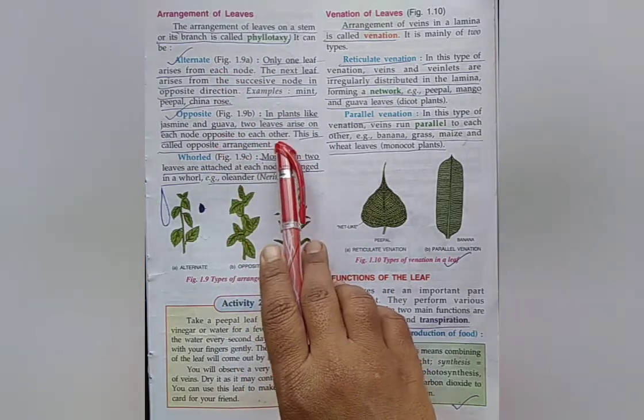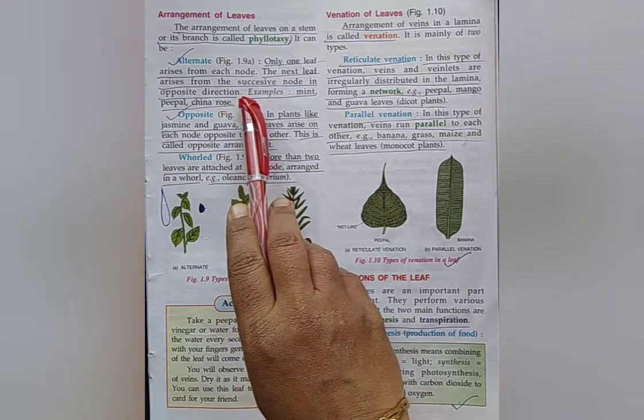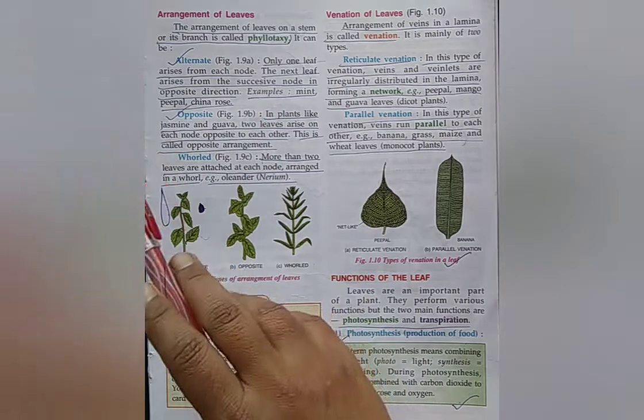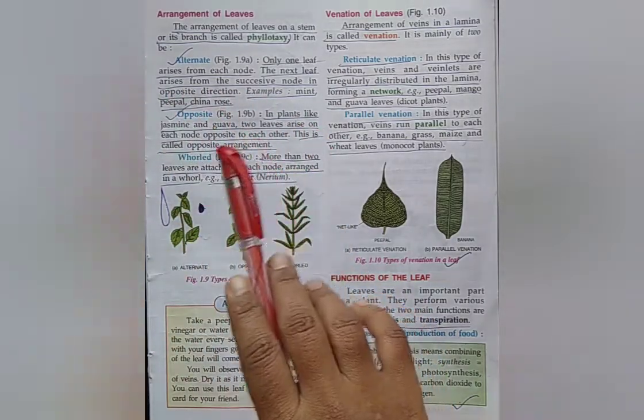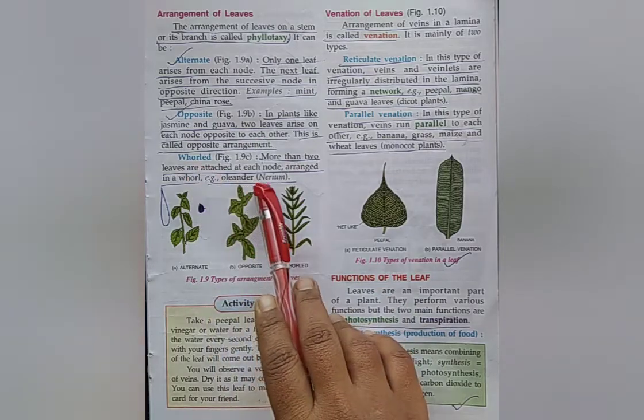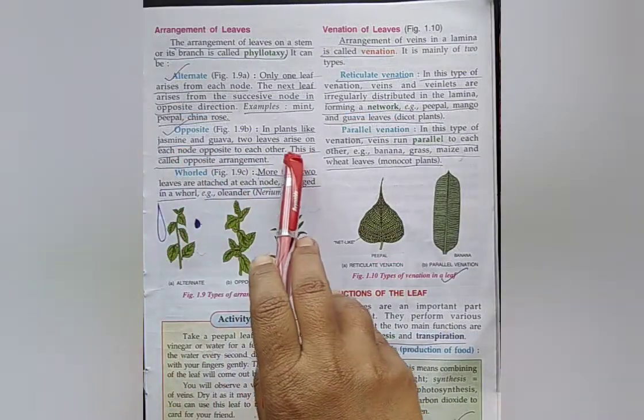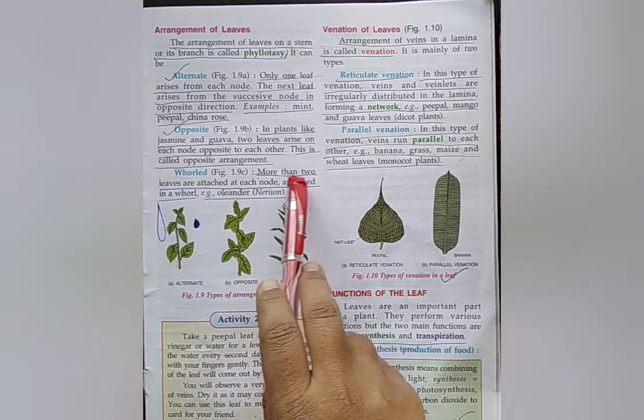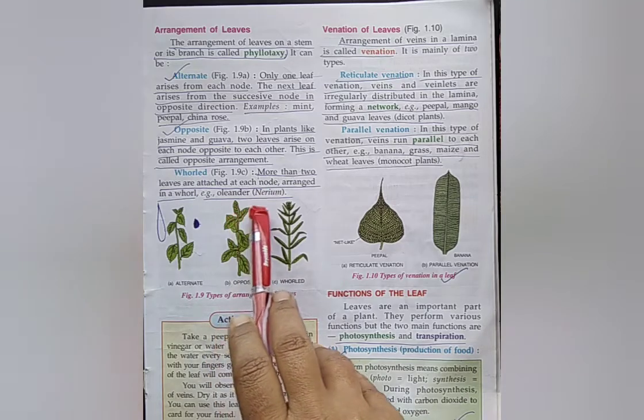What is alternate arrangement of leaves? Only one leaf arises from each node. The next leaf arises from the successive node in opposite direction. This type of arrangement is called alternate arrangement. Example: Mango, peepal. What is opposite arrangement of leaves? In plants like jasmine and guava, two leaves arise on each node opposite to each other. This is called opposite arrangement.